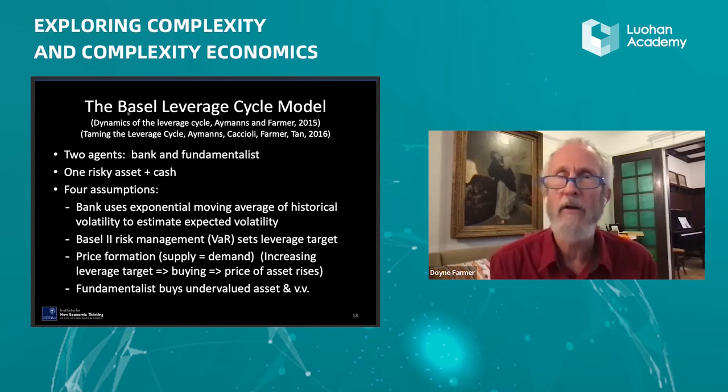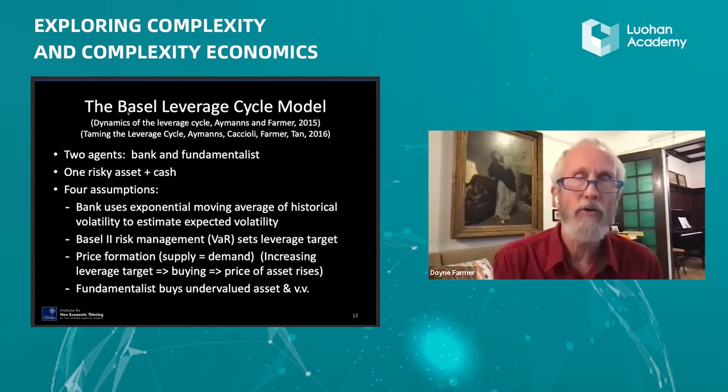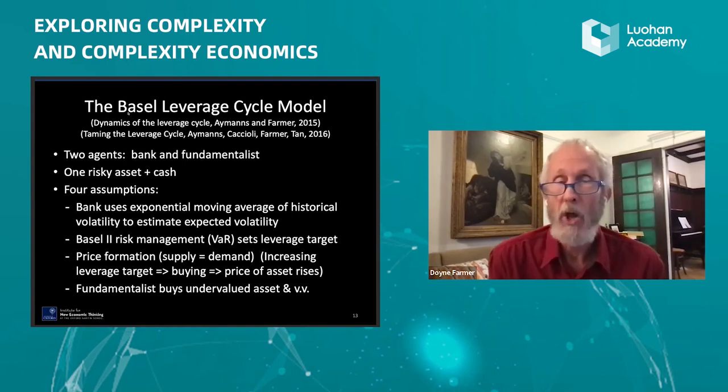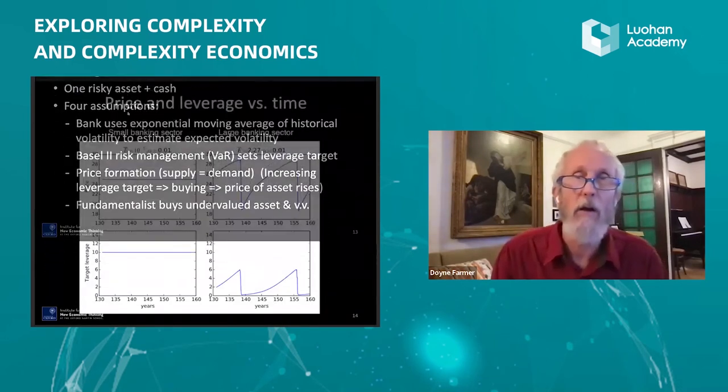We make four assumptions. Banks use an exponential moving average of historical volatility to estimate their expected volatility. They use Basel II risk management, that's value at risk to set their leverage target. They assume supply equals demand. And we assume fundamentalist buy undervalued assets and vice versa. Very simple. What do we get?